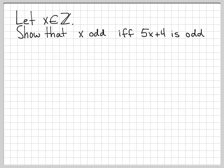Any time you see the words if-and-only-if or the biconditional double arrow, that means you really have to prove two different cases. We need to prove that when x is odd, this implies 5x plus 4 is odd. We also have to go the other way. When 5x plus 4 is odd, this implies that x is odd. We're going to break this down into two cases.